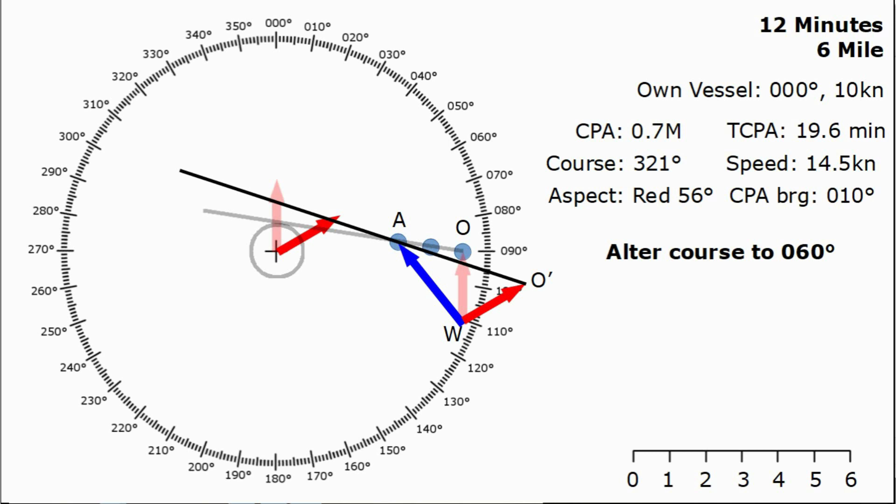You must note that we've assumed the course alteration is instantaneous at point A. If we'd have needed to wait maybe a minute, we'd have needed to continue our plot on for another minute before undertaking this course alteration. Now that we've got our relative line of approach, we can put on the ring to work out our new closest point of approach and the new bearing to the closest point of approach.